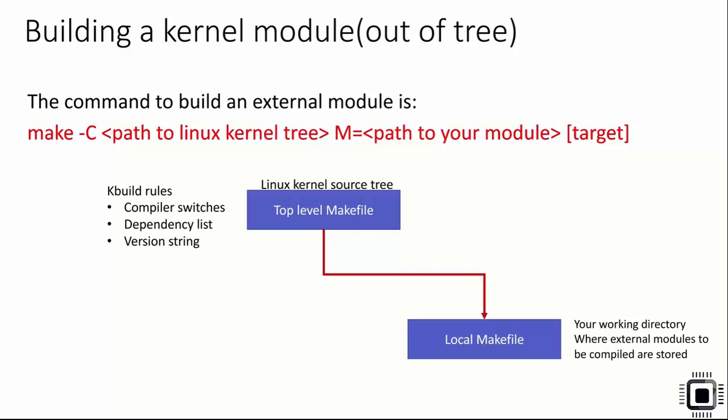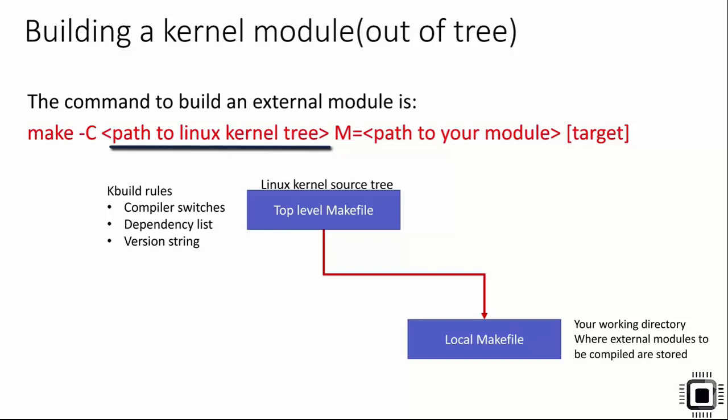Let's see the procedure to build an out-of-tree kernel module. The command is simple: you use the make command with the -C switch pointing to the Linux kernel source tree - this triggers the top-level Makefile of the Linux kernel source. When make executes with -C, it enters into the Linux kernel source tree and executes the top-level Makefile, which brings in all compiler switches, dependency lists, and version strings to build your kernel module.